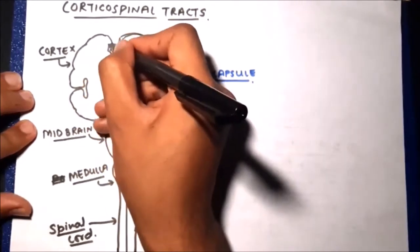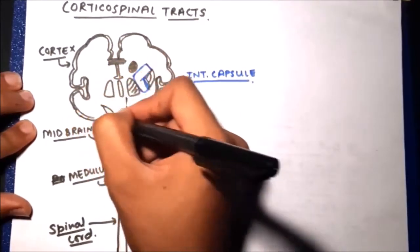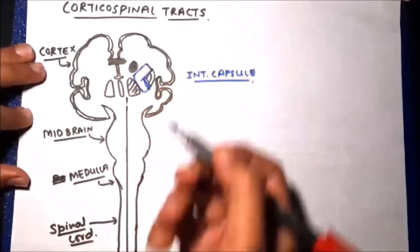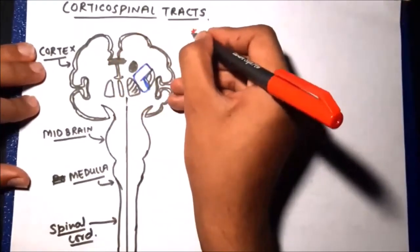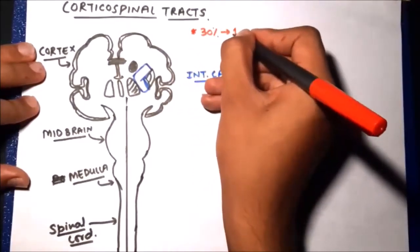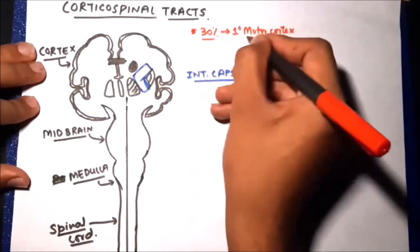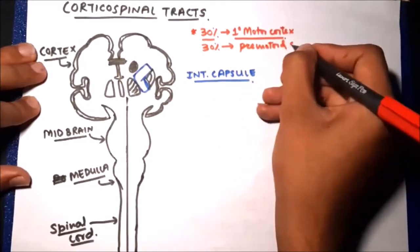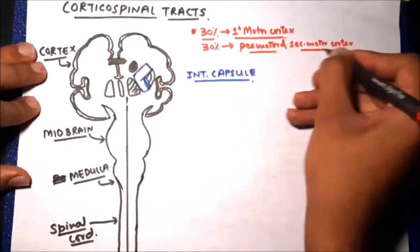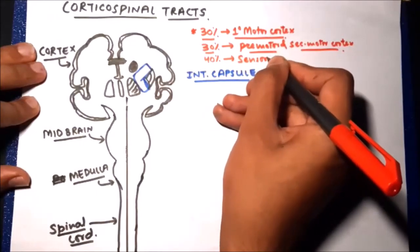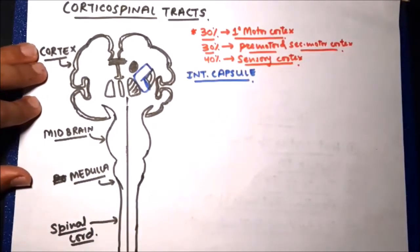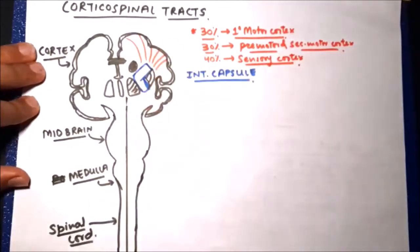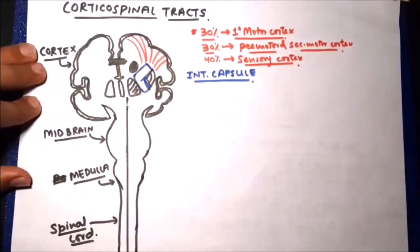The fibers of the corticospinal tract originate from various areas of the cortex. Thirty percent of fibers originate from the primary motor cortex, which is area 4, and from the pre-motor and secondary motor area, which is area 6. Forty percent of fibers originate from the sensory cortex, so the origin of this tract is from both motor as well as sensory cortex.